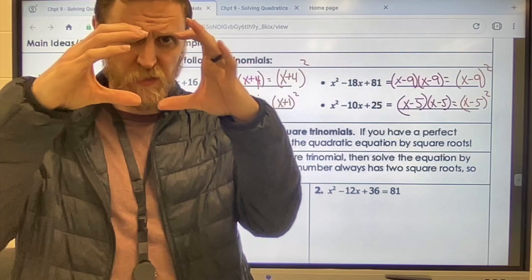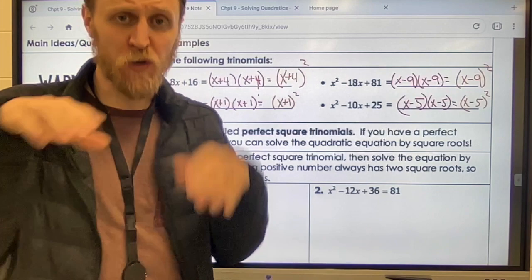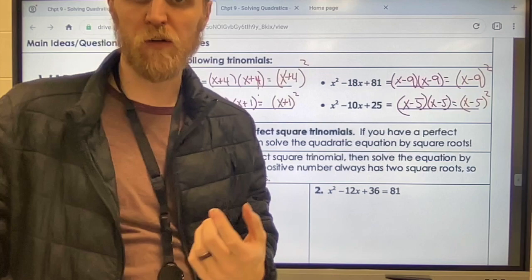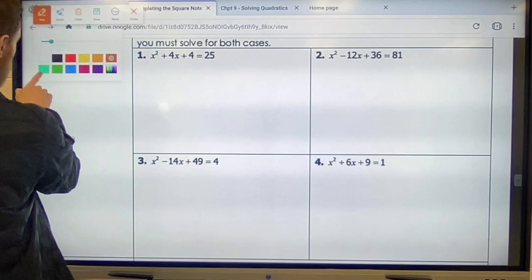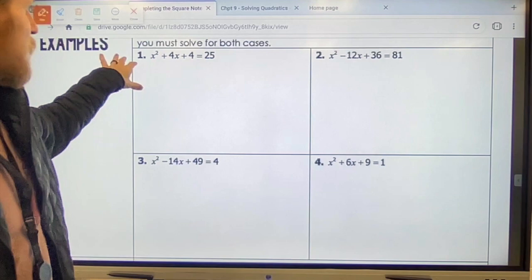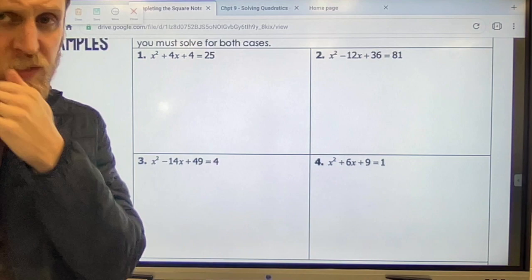We can use that to create the thing that we had yesterday where we take the square root of both sides, split them into two parts, and solve for x. So that's what it's asking you to do on this next section: go ahead and do that part first where we factor it, and then when you get that squared part, solve it for x. Let's do an example together on that part. On this first one, number one, follow along with me on your paper. It says x squared plus 4x plus 4 equals 25.